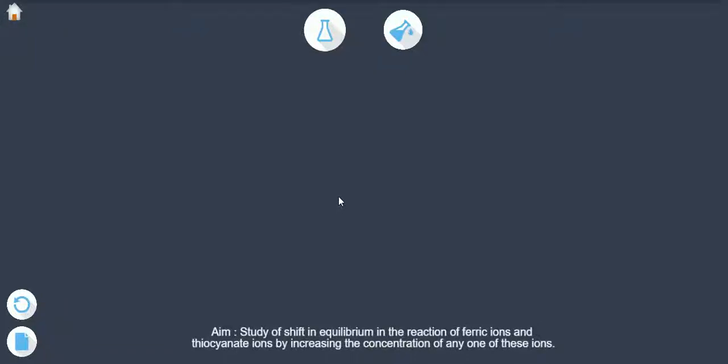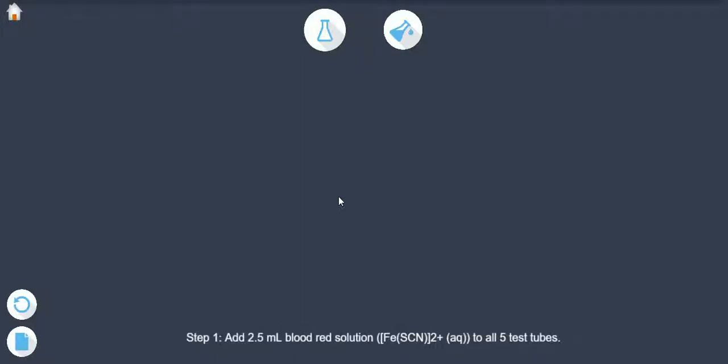AIM: Study of shift in equilibrium in the reaction of ferric ions and thiocyanate ions by increasing the concentration of any one of these ions. Add 2.5 ml blood red solution, i.e. ferricyanate aqueous, to all 5 test tubes.